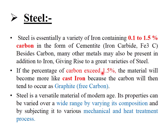If the percentage of carbon is more than 1.5%, the material is called cast iron. Cast iron has a higher percentage of carbon, which may exist in free form. More carbon percentage means more strength, so cast iron is much stronger than steel. However, steel is a very versatile material widely used in industry.